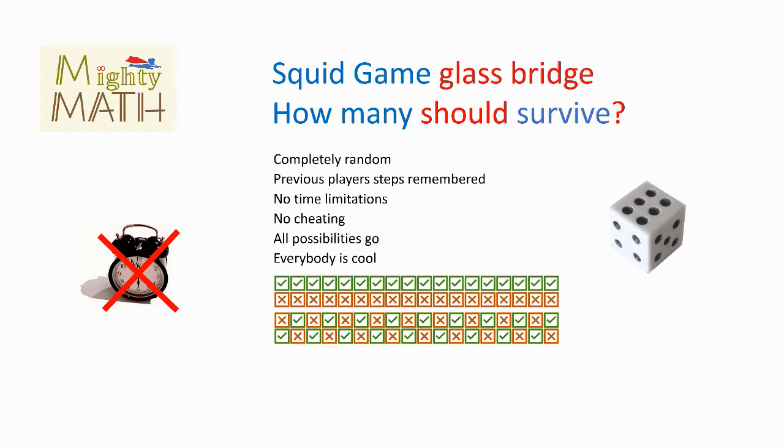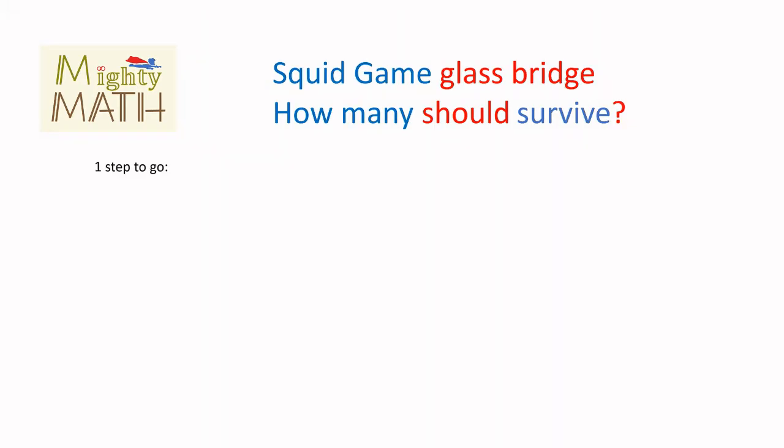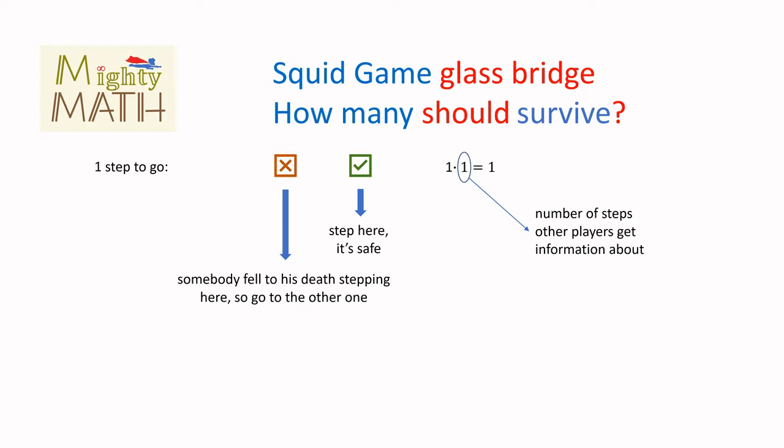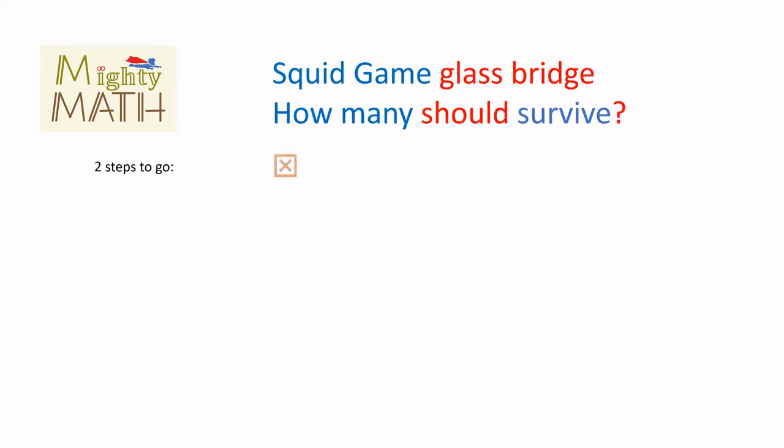Let's try to work out the average number of steps a player gives information about to the others before he is out of the game. As we said, information about one step is certain. So if there's just one step to go, it's not really interesting because a player would either get it right and pass safely or indicate to the others by failing or by falling or not to step.